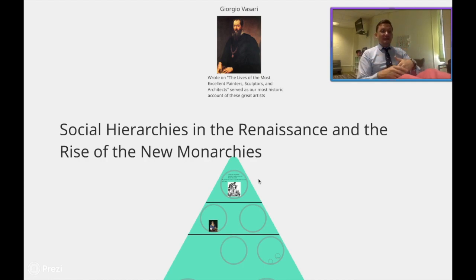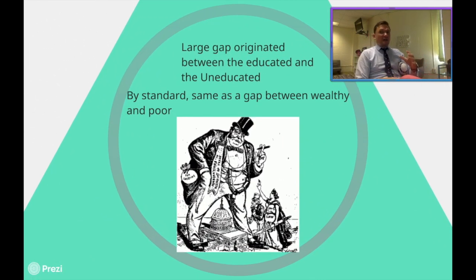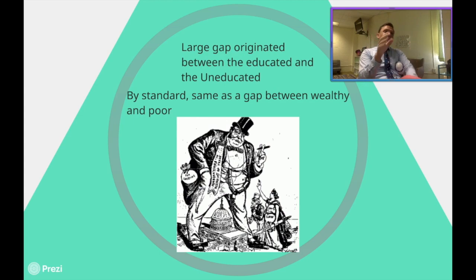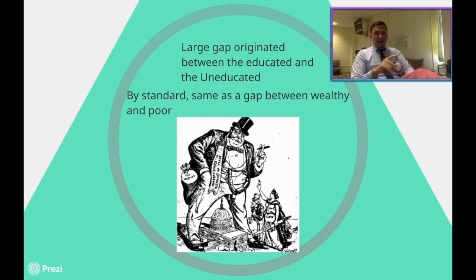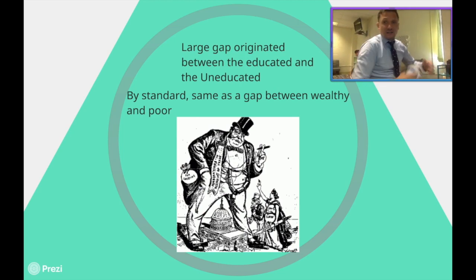What we're getting into now is the social hierarchy of the Renaissance period and the rise of what we call in AP Euro the 'new monarchies.' Underline, highlight, or circle 'new monarchies' — it's a very important concept that you need to be able to reference back to at any given time.